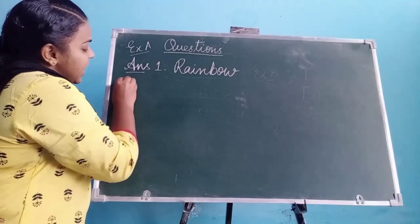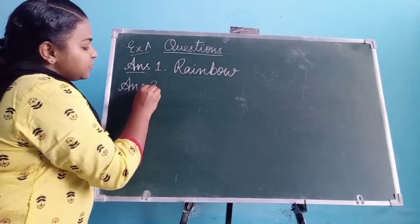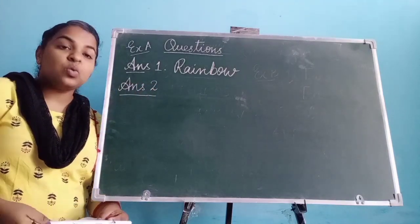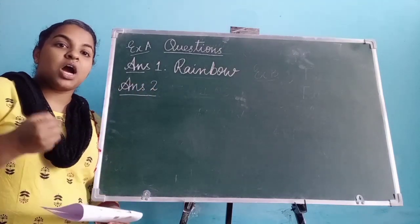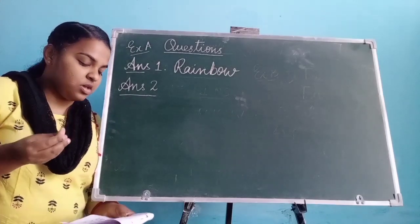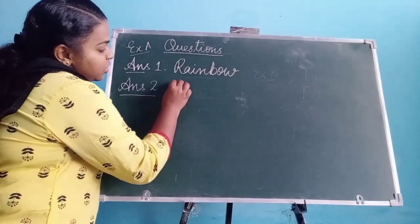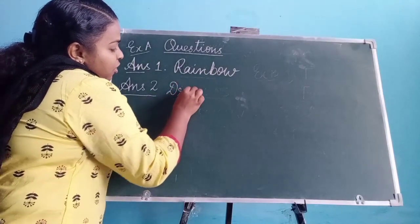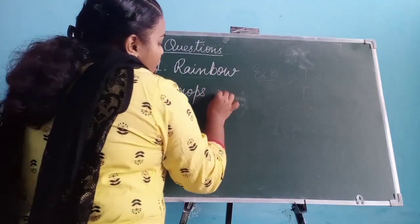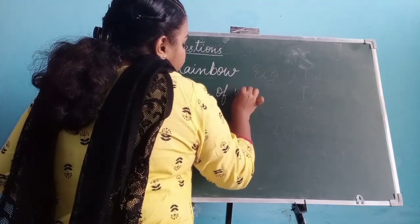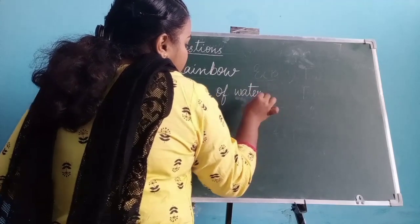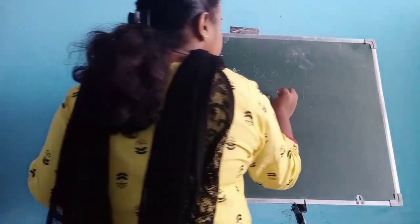Next is answer 2. The question is: how is the rainbow formed according to the poem? You have to write: drops of water through sunlight.